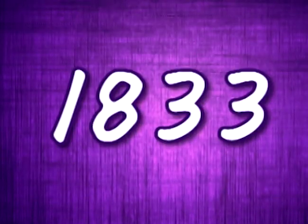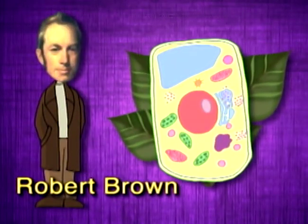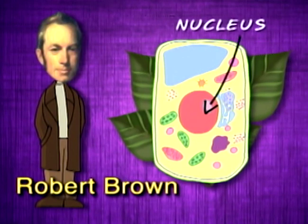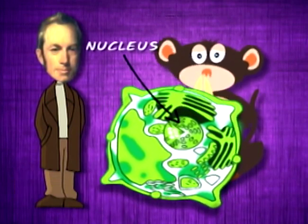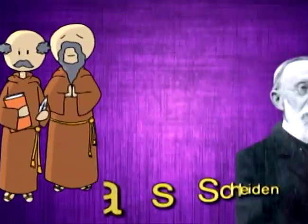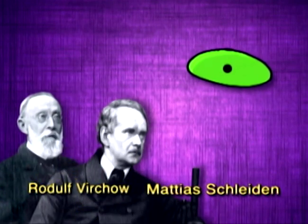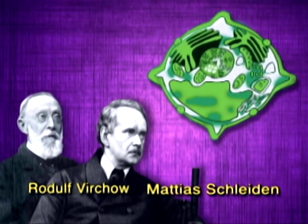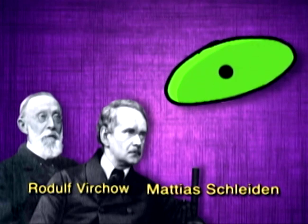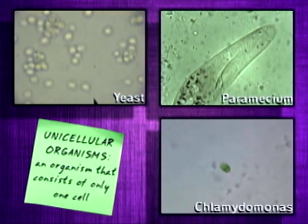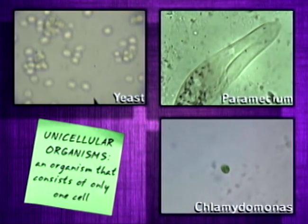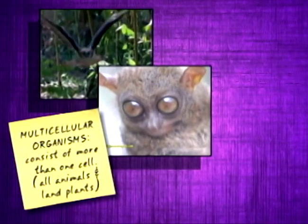In 1833, Robert Brown discovered the nucleus in plant cells, which were later also observed in animal cells. As the microscope became more powerful, scientists Matthias Schleiden and Rudolf Virchow were able to see structures inside the cells. They also observed that cells would grow larger and divide into smaller but still living cells. Furthermore, they noted that some organisms are unicellular, while others are multicellular.